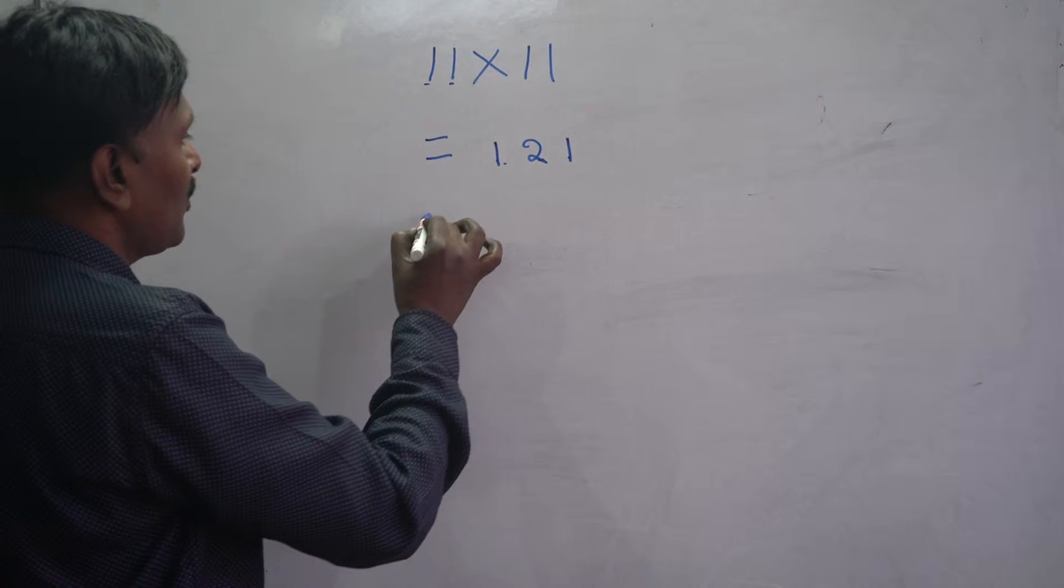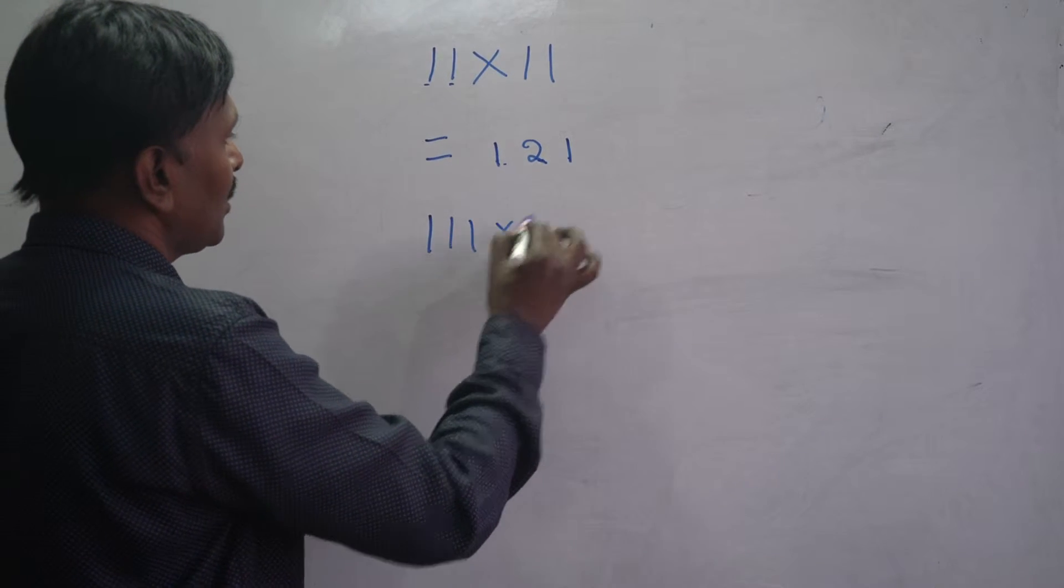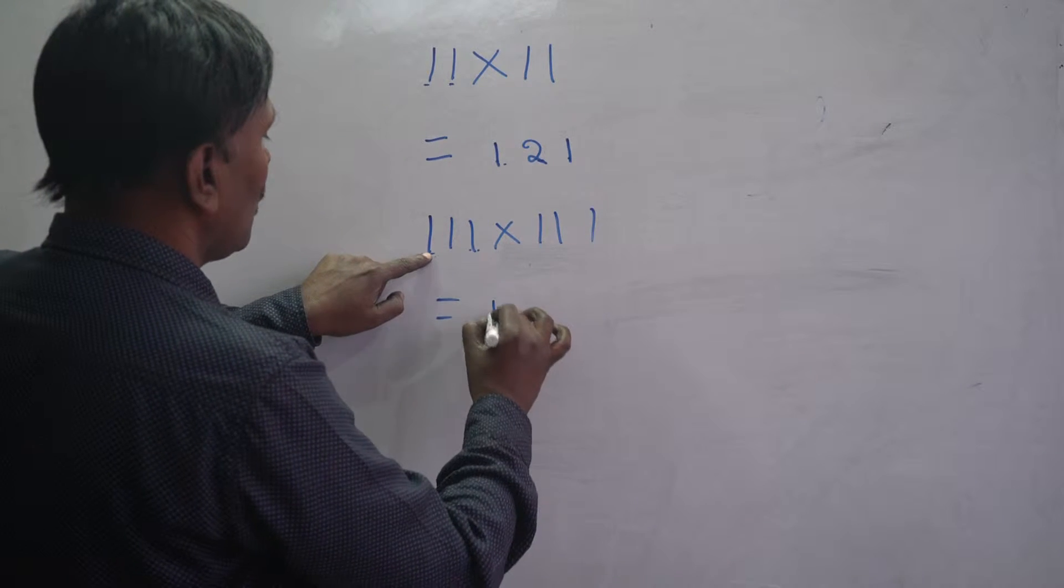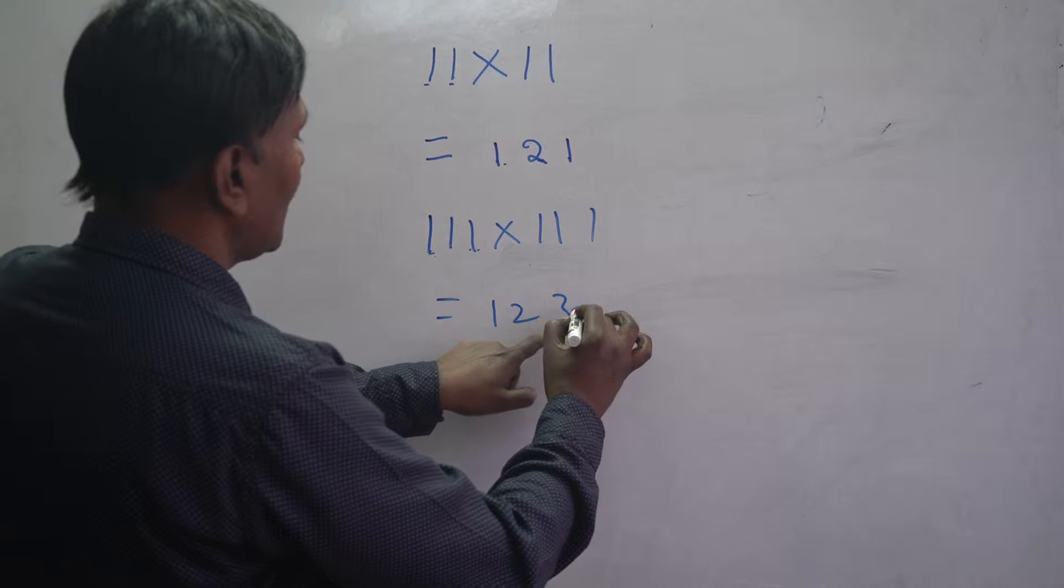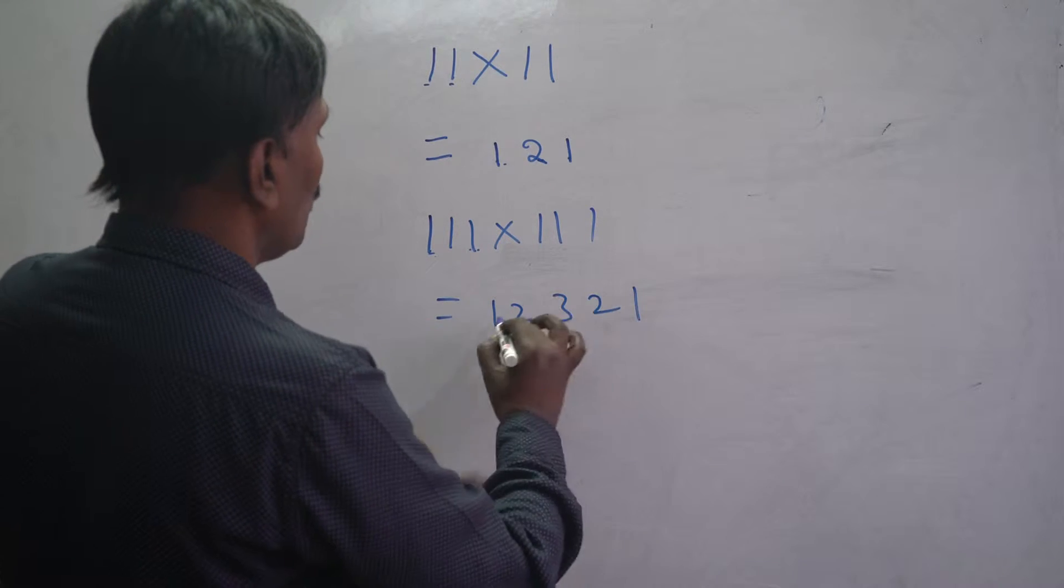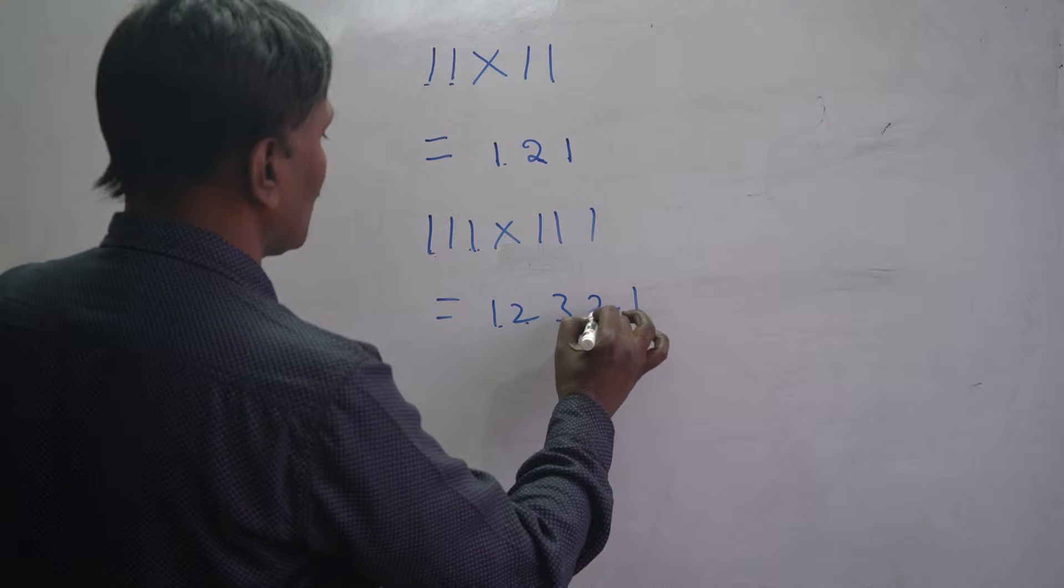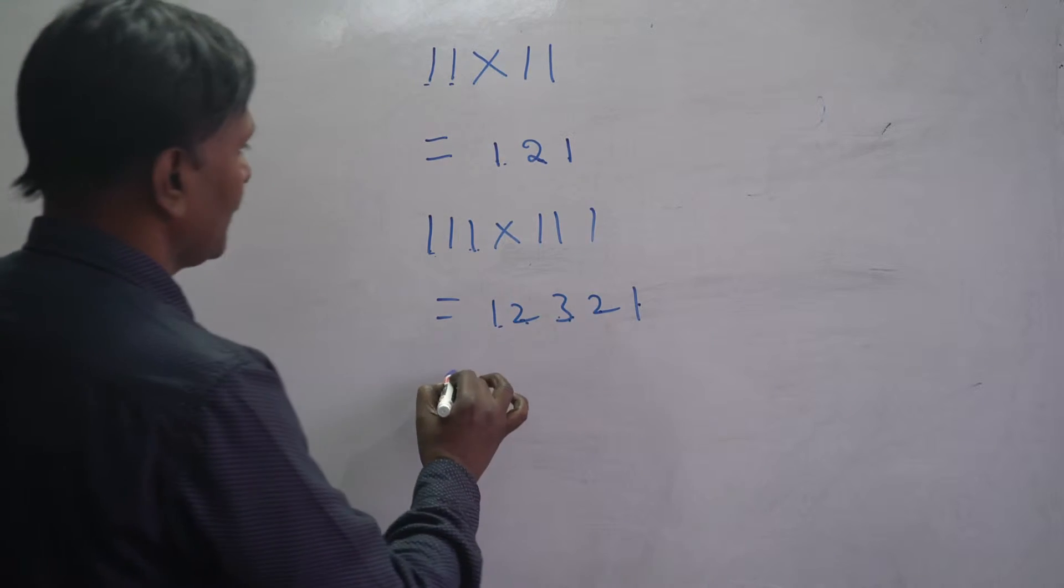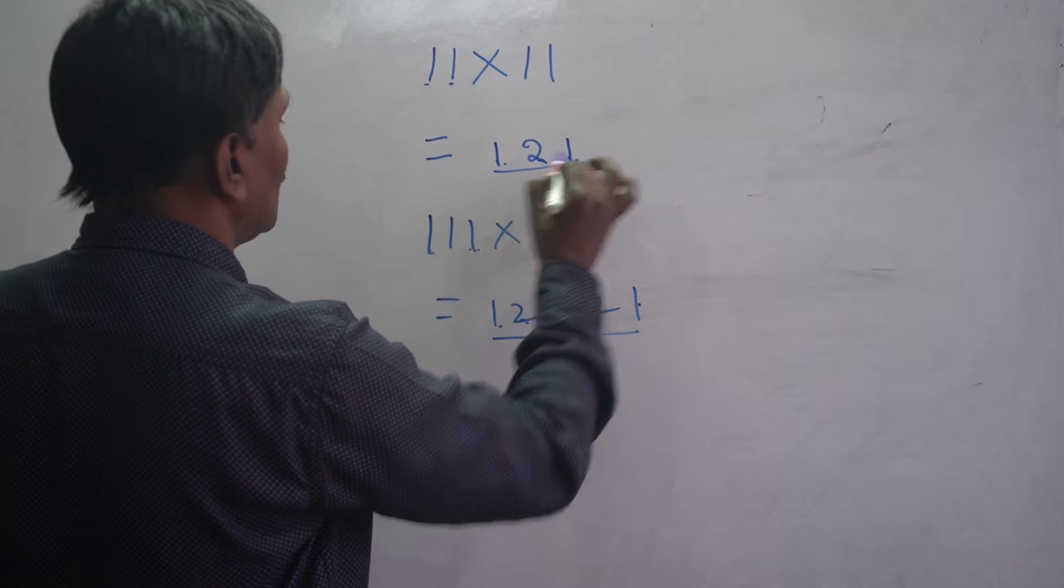If you see three ones, this is three digits. Three ones: 1, 2, 3, and take next: 2, 1. So 1, 2, 3, subtract 1: 1, 2, 3, 2, 1. This is the output. No need to multiply directly.